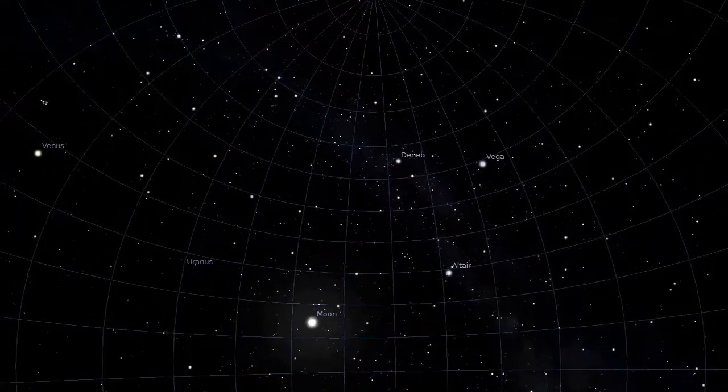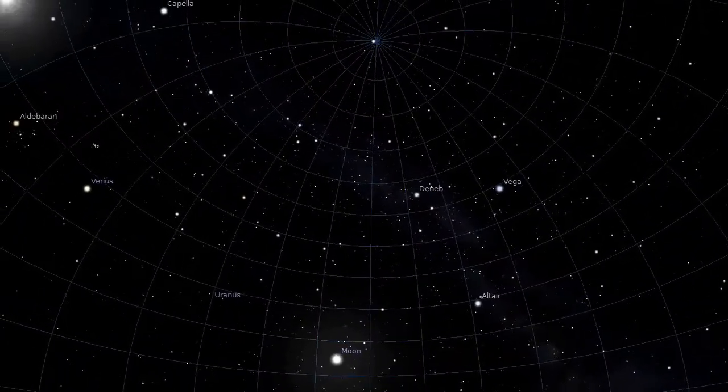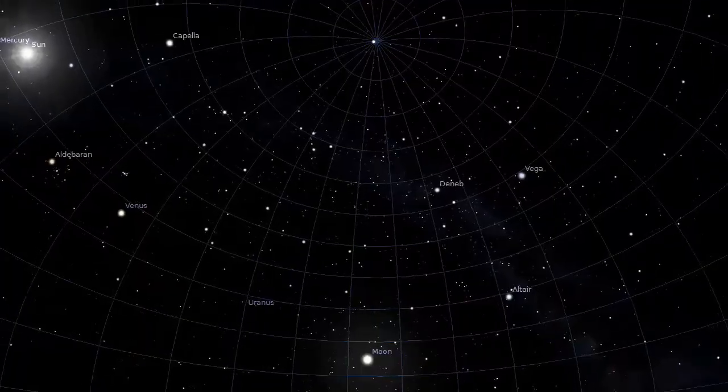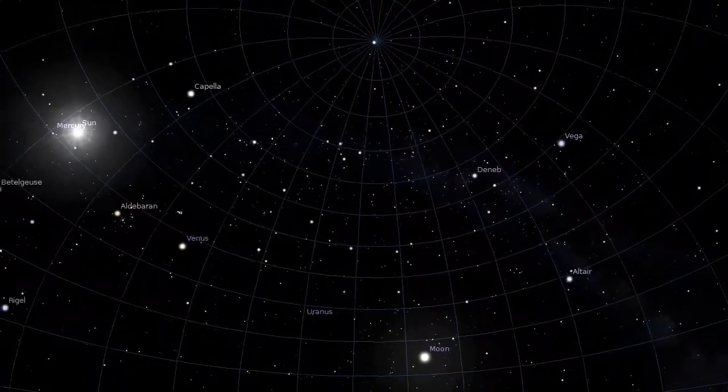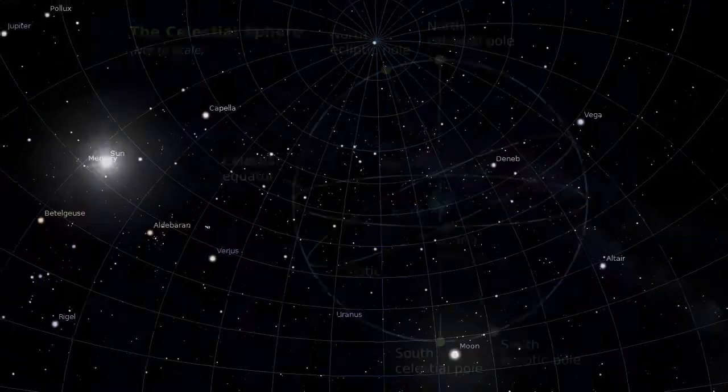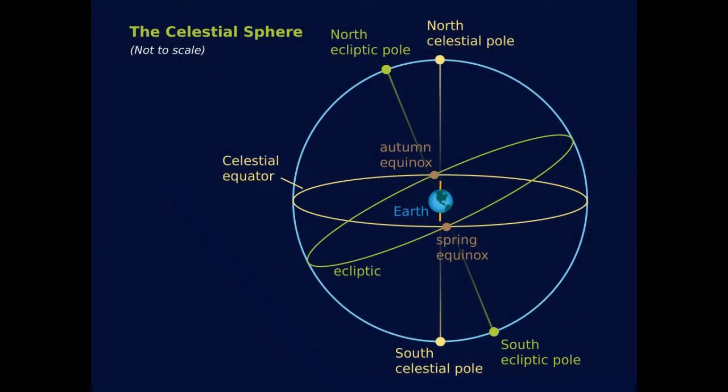The Earth spins in space, rotating once a day on its axis, but from an observer's point of view, the Earth appears to remain still while the celestial sphere seems to rotate once a day around an axis that runs from the north celestial pole to the south celestial pole.